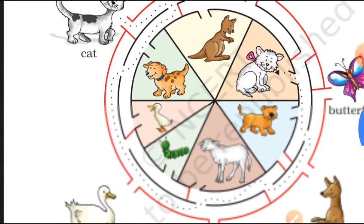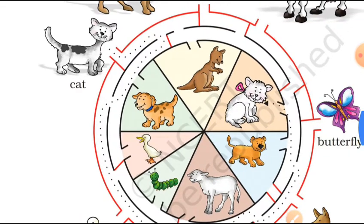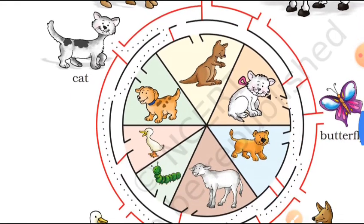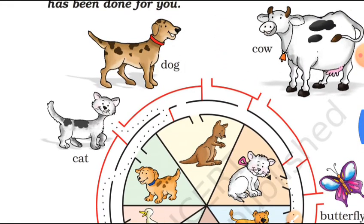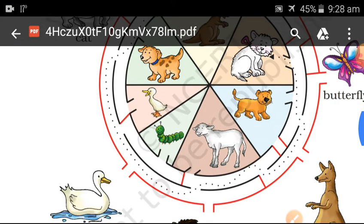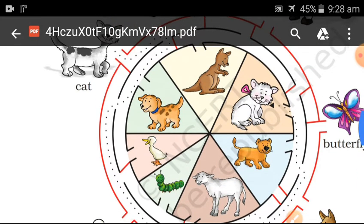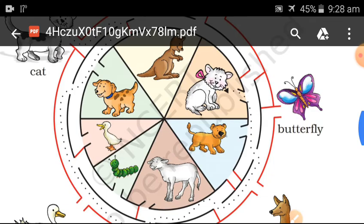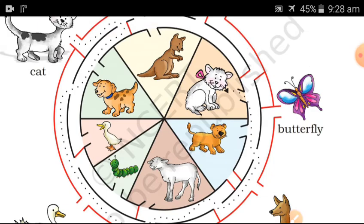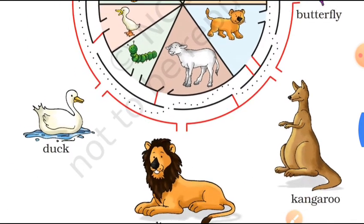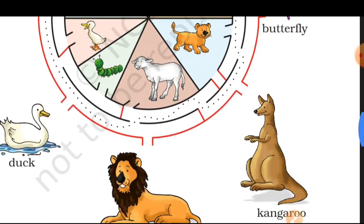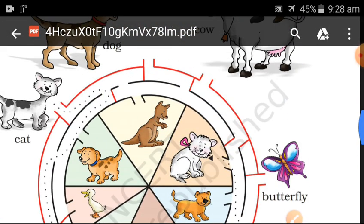So we will learn animal babies once again. Now baby of cat is called kitten. Baby of dog is called puppy. Baby of cow is called calf. Baby of duck is called duckling. Baby of butterfly is called caterpillar. And baby of lion is called cub. Baby of kangaroo is called joey.